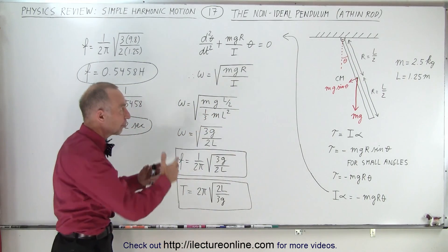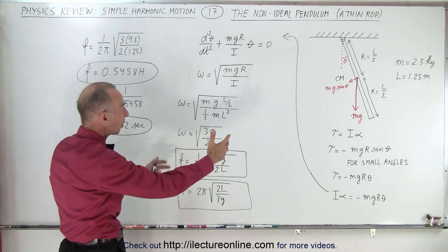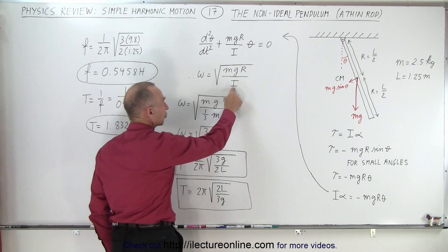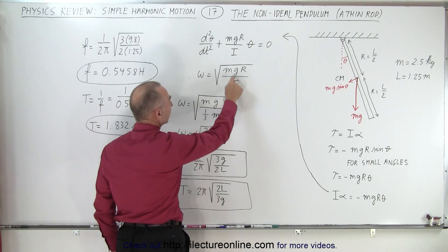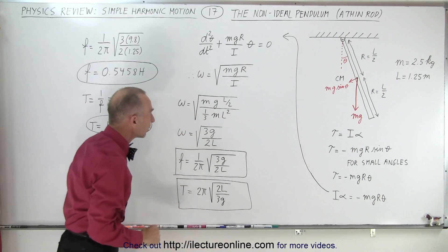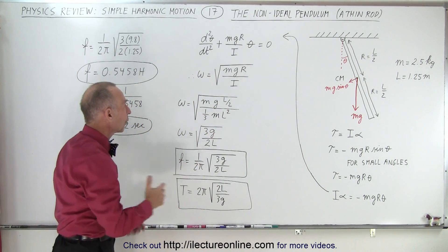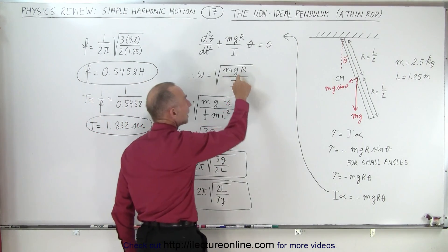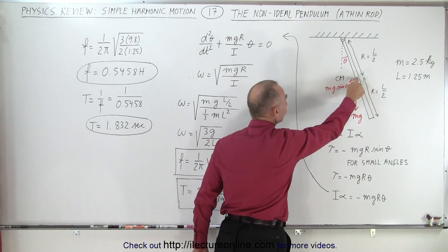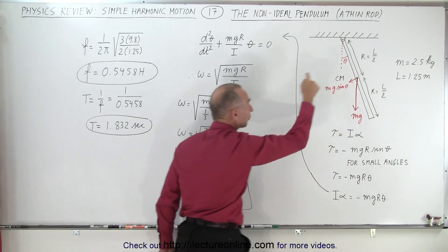And that is for all cases, no matter what the shape of the object is. As long as you find the moment of inertia of the object, you take that into the denominator, you have mg r in the numerator, and you're ready to go ahead and find the frequency and the period. Notice that r here will be the distance to the center of mass from the point of rotation.